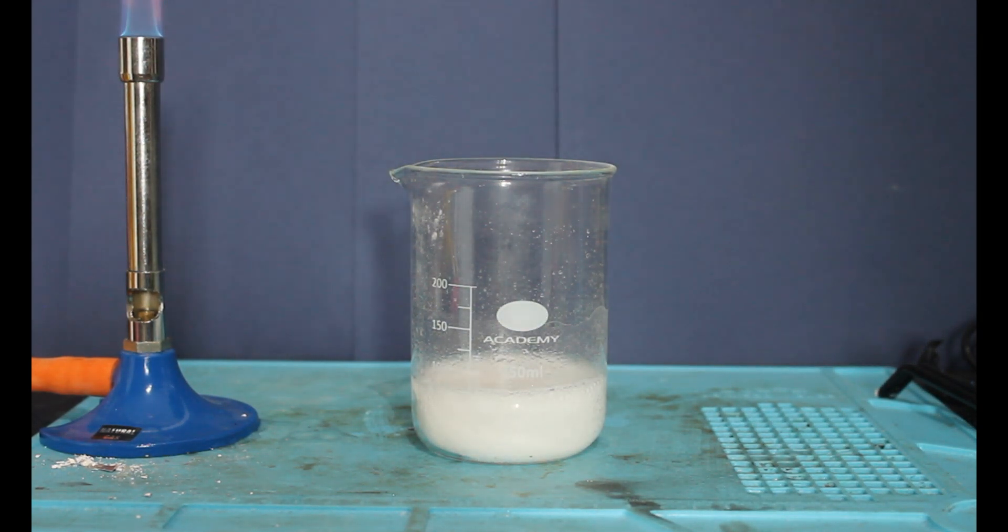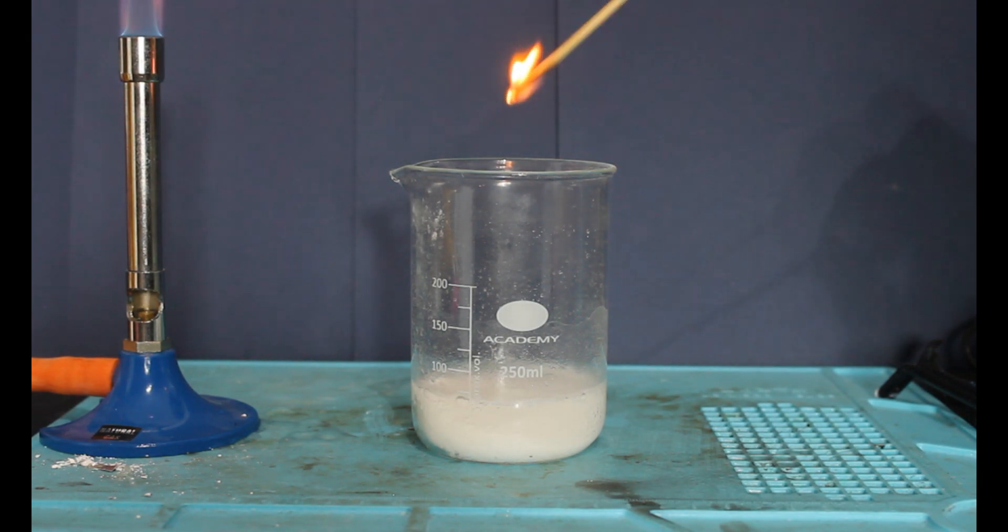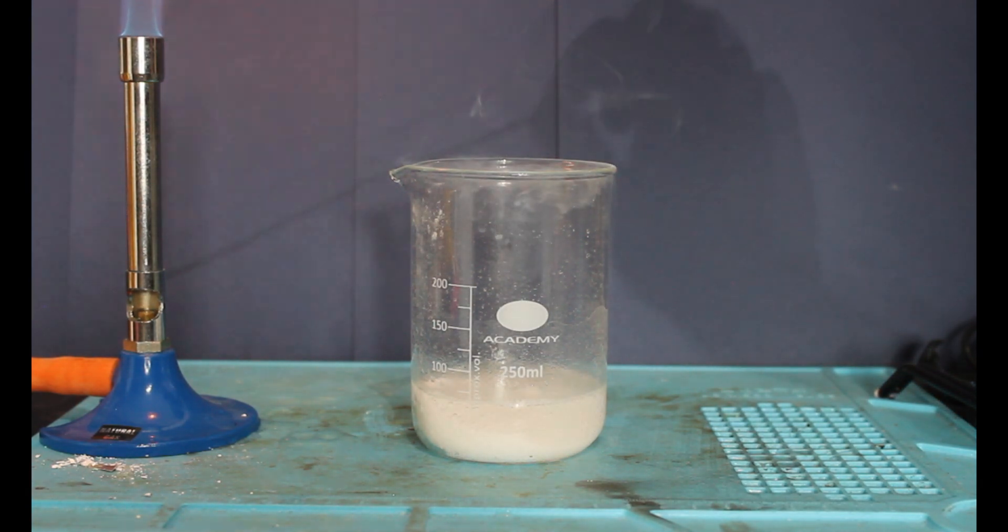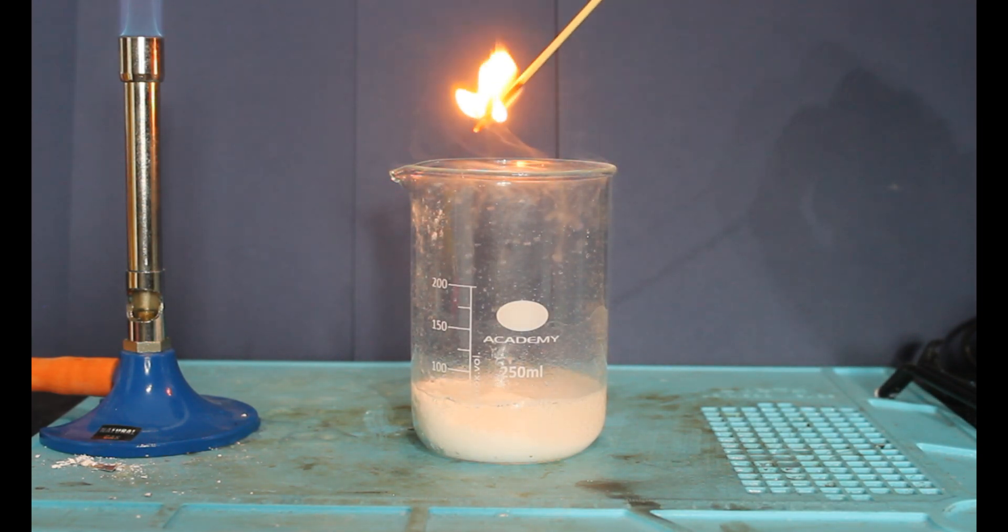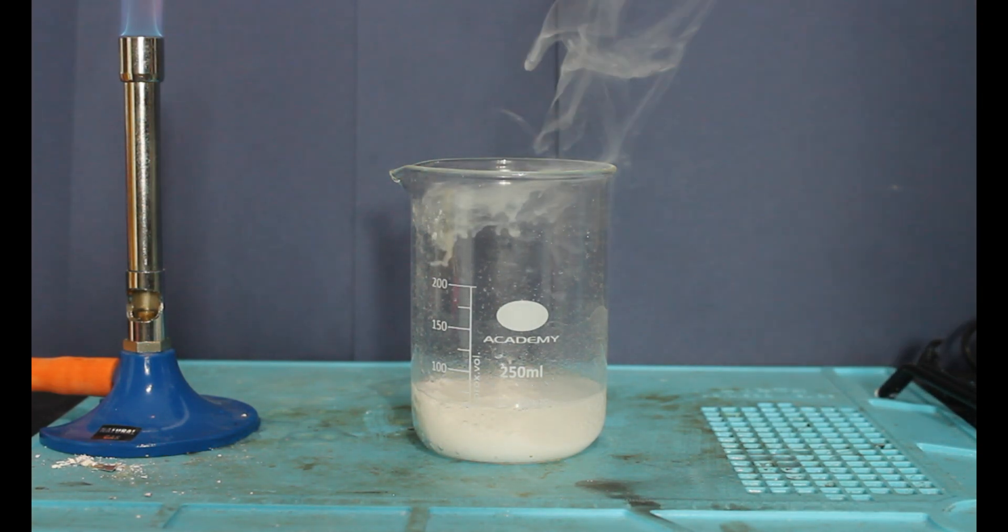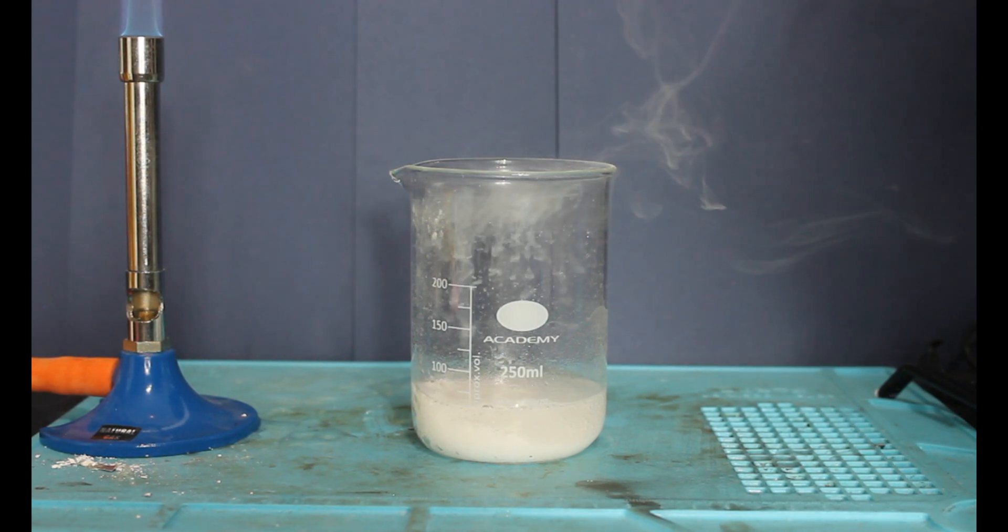Now, carbon dioxide will displace the oxygen in the beaker, which means when we put a flame into carbon dioxide, it will put it out. Carbon dioxide is commonly used in fire extinguishers for this very reason.